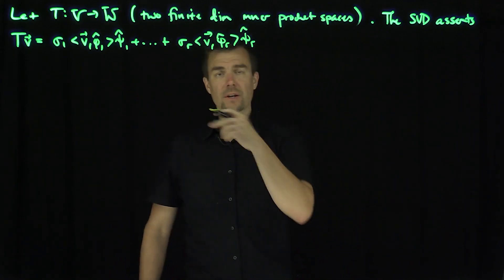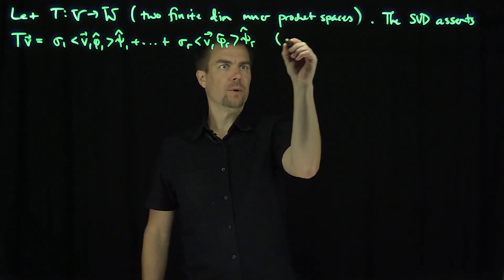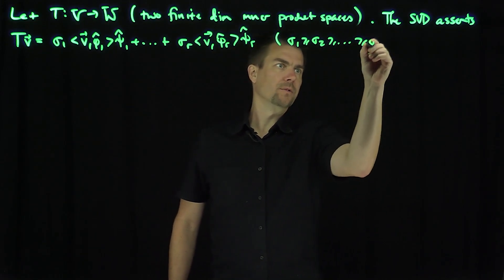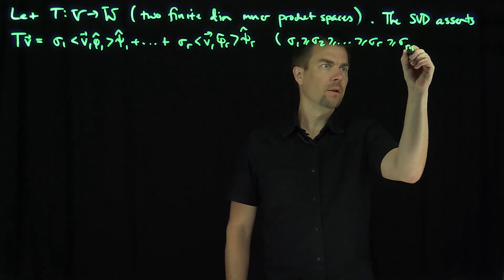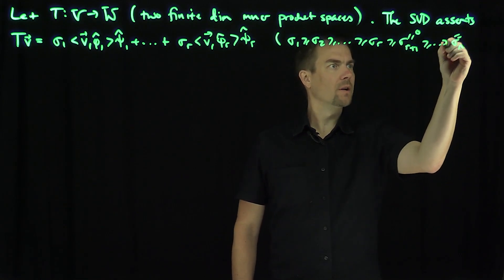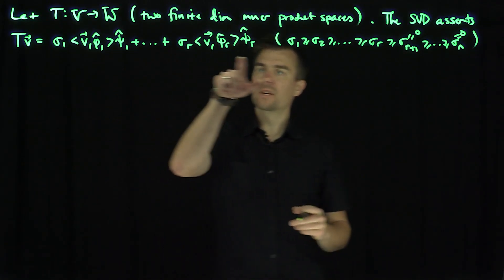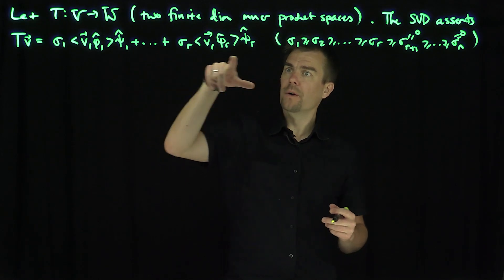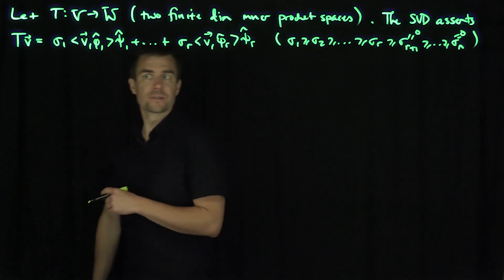These collections of singular values and singular vectors are orthogonal sets. We have sigma_1 ≥ sigma_2 ≥ ... ≥ sigma_r, where r is the rank, and then sigma_{r+1} = ... = sigma_n = 0. The phi_1 through phi_n form an orthonormal basis of V, and psi_1 through psi_m form an orthonormal basis for W. That is the singular value decomposition.